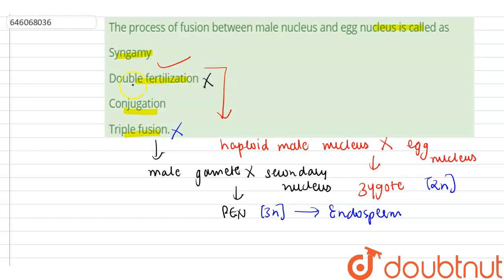And conjugation - conjugation is the transfer of genetic material between bacterial cells by direct cell-to-cell contact. So the correct option is syngamy. Thank you.